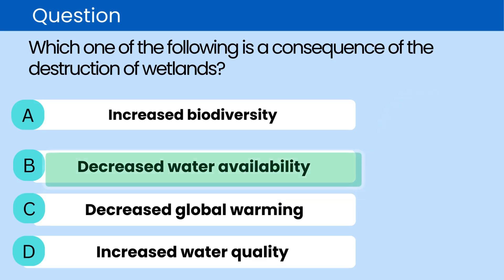The correct answer is B. Decreased water availability. Wetlands act as natural reservoirs and filters, so their destruction reduces water availability and quality.